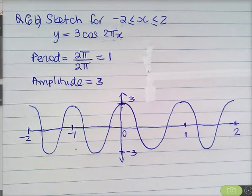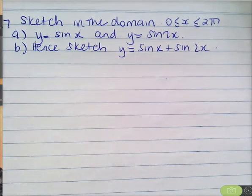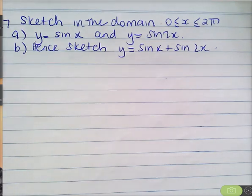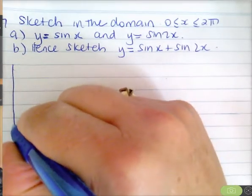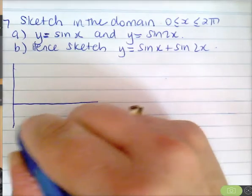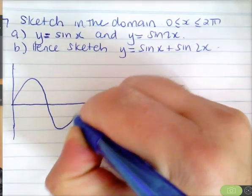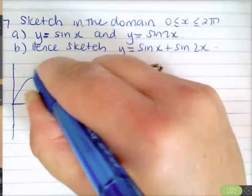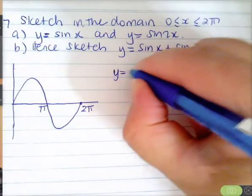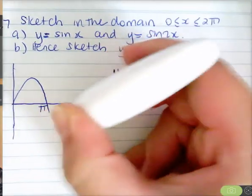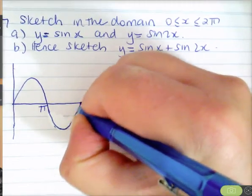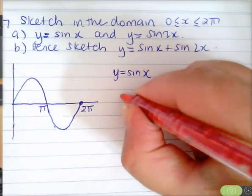Now for question 7: we're asked to sketch y equals sine x and y equals sine 2x, and then hence sketch y equals sine x plus sine of 2x. What I'm going to do is a little table of values for part b. First I'll sketch y equals sine x and y equals sine 2x. Sine of x looks like this with a period of 2π — that's y equals sine x in blue. And I will draw y equals sine 2x in red.